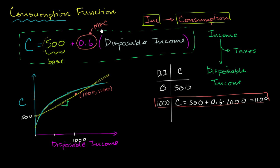I'm going to do two things: generalize this linear consumption function, and make it a function not just of aggregate disposable income (as we did in the last video), but of aggregate income. We'll then plot that generalized version using variables instead of specific numbers.